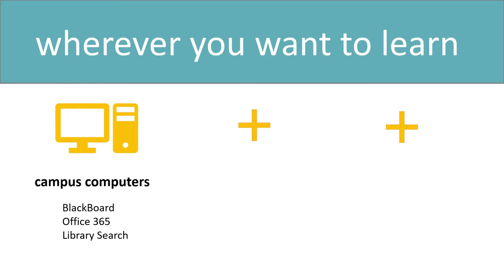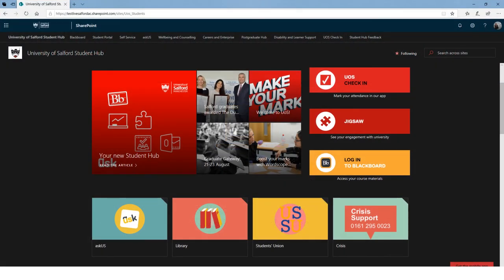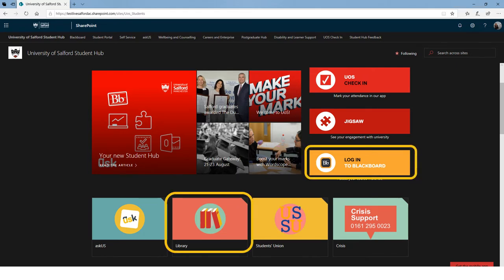But what if you bring your own laptop onto campus, or you're studying from home on your own computer? The way into all our resources here is to go on the internet and search for 'Salford Uni Student Hub', or bookmark this link: www.salford.ac.uk/students. You'll need your university email address and password to log in. From here you can access Blackboard, Library Search, your Office 365 account including OneDrive, and your university email.